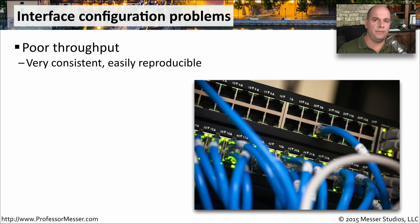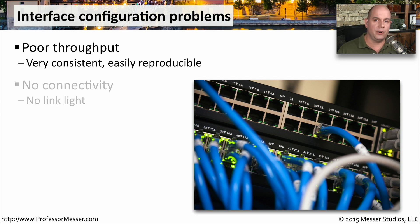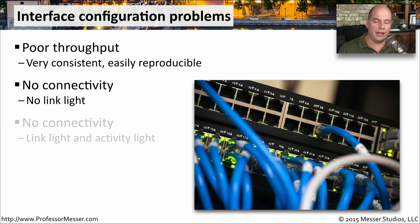If you're suffering from an interface configuration issue, you might see symptoms like these. You could see very poor throughput — transferring a file slowly, or noticing consistently low throughput while browsing. Perhaps your interface card shows no link light at all, meaning no connectivity to the network and no signal or lights on your network interface card. Or the light may be blinking or solid, but no information is being sent. If any of these things are occurring, you might have a configuration problem with the interface card itself.